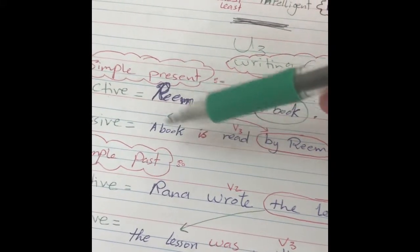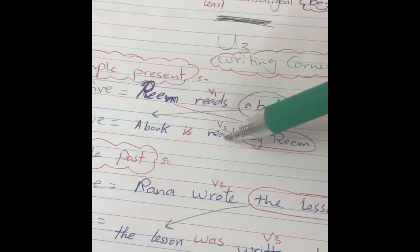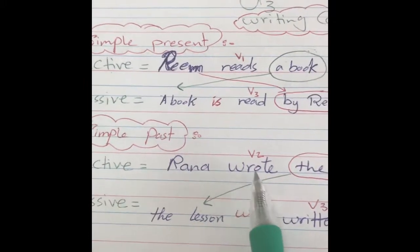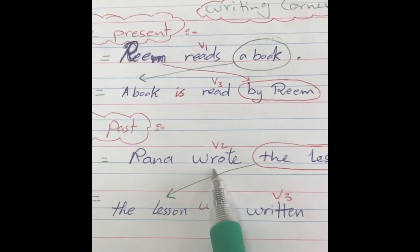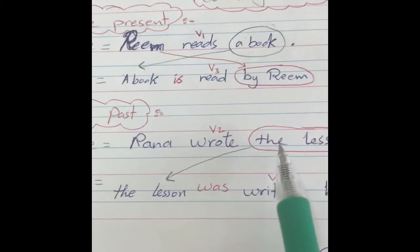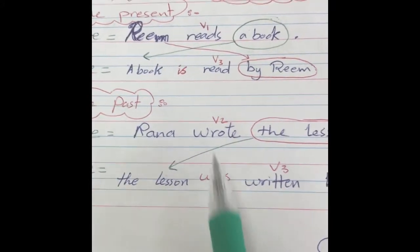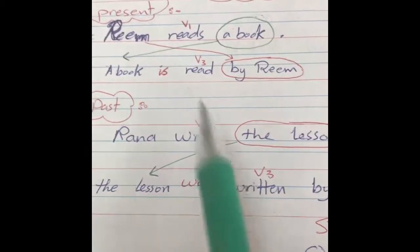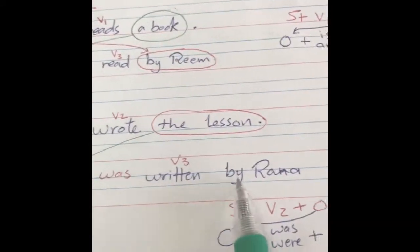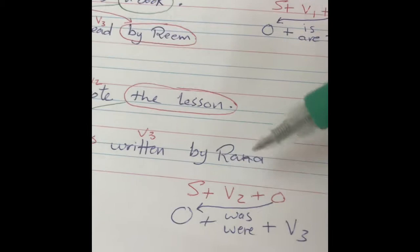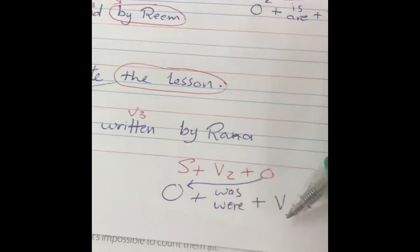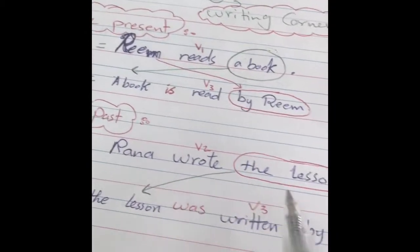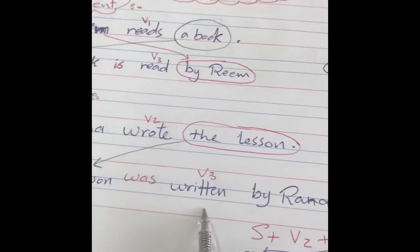Simple past, the same thing. Here subject, verb two, object. The verb is in simple past. We put the object in the beginning, and then instead of is or are, it becomes was or were. If it's singular, was. If it's plural, were. And then verb three, the same. And we can say by someone. So Rana wrote the lesson becomes the lesson was written by Rana.